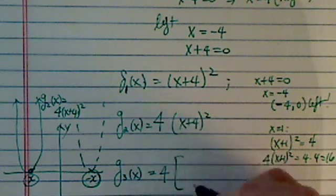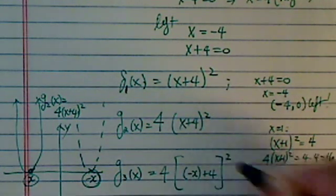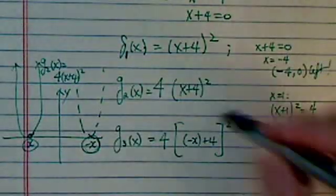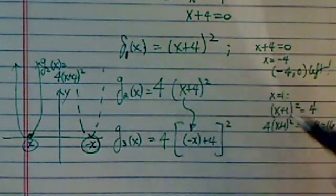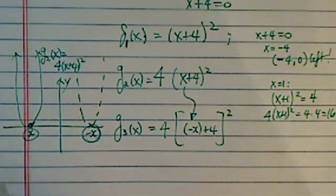So equal to 4(-x + 4), the whole thing squared. So all I did is I replaced the x with -x. That gives me the reflection by the y-axis.